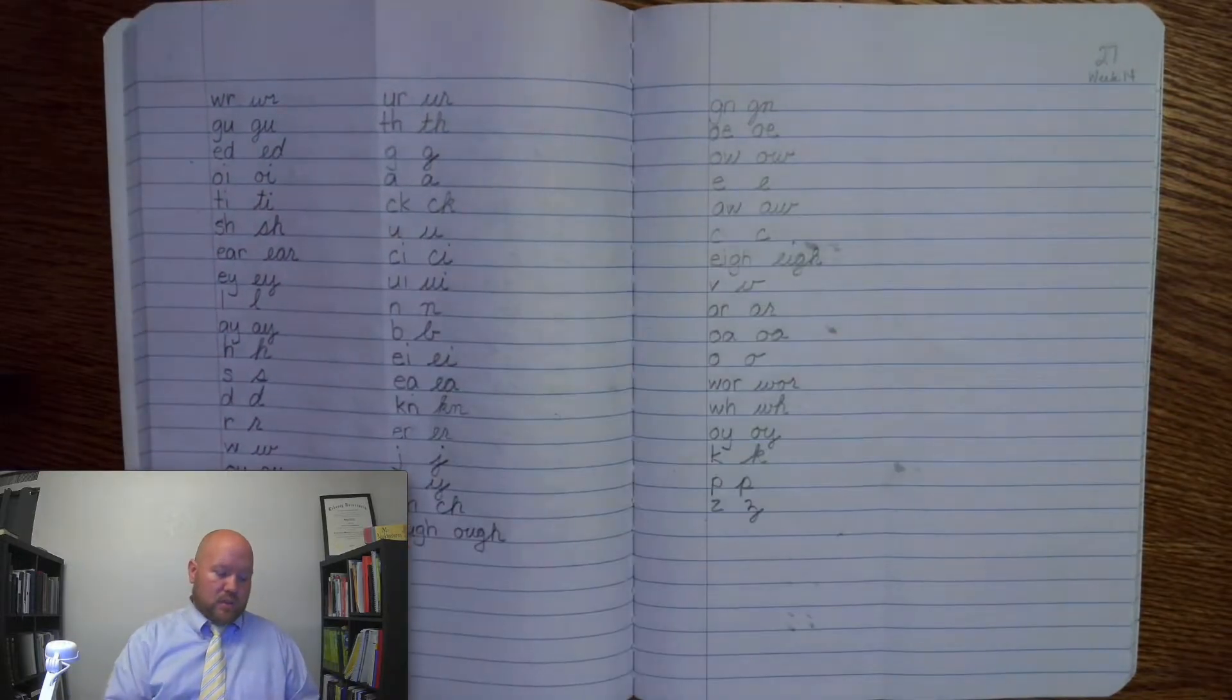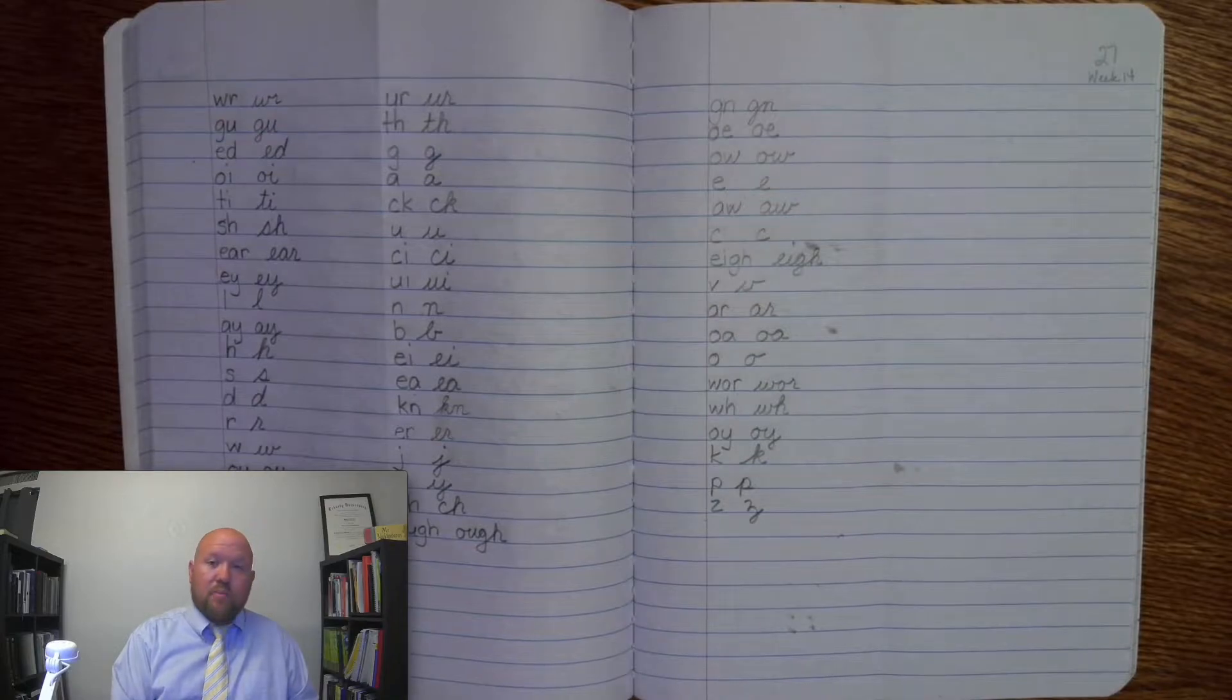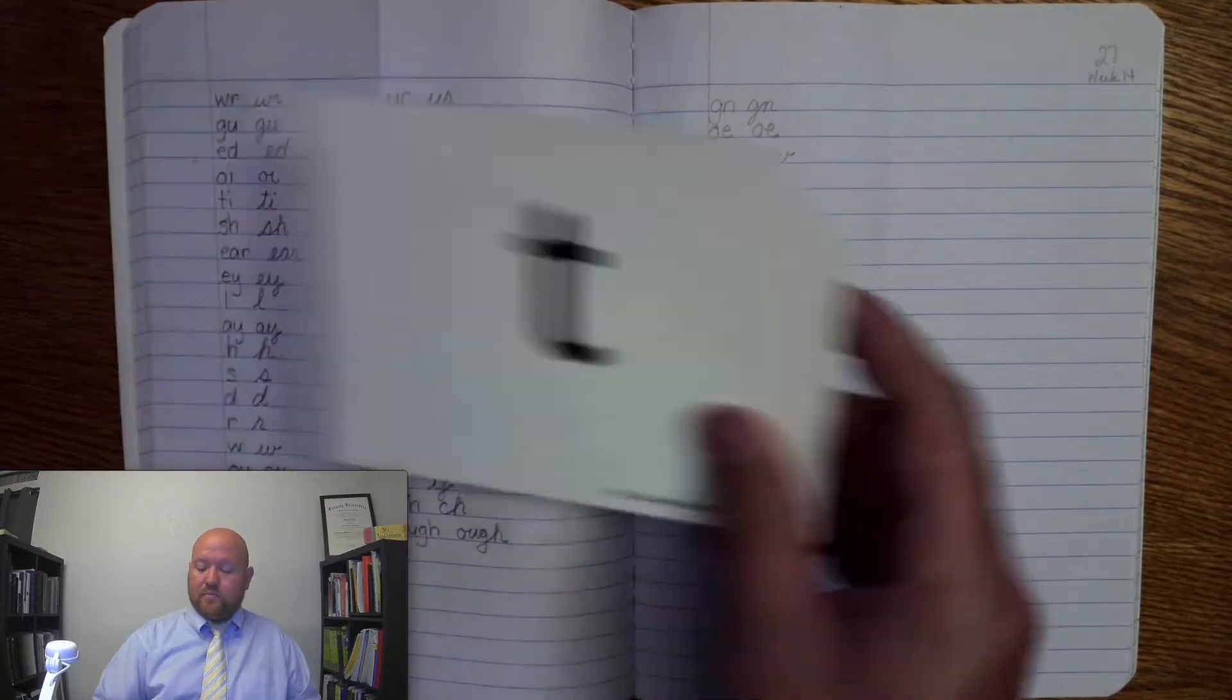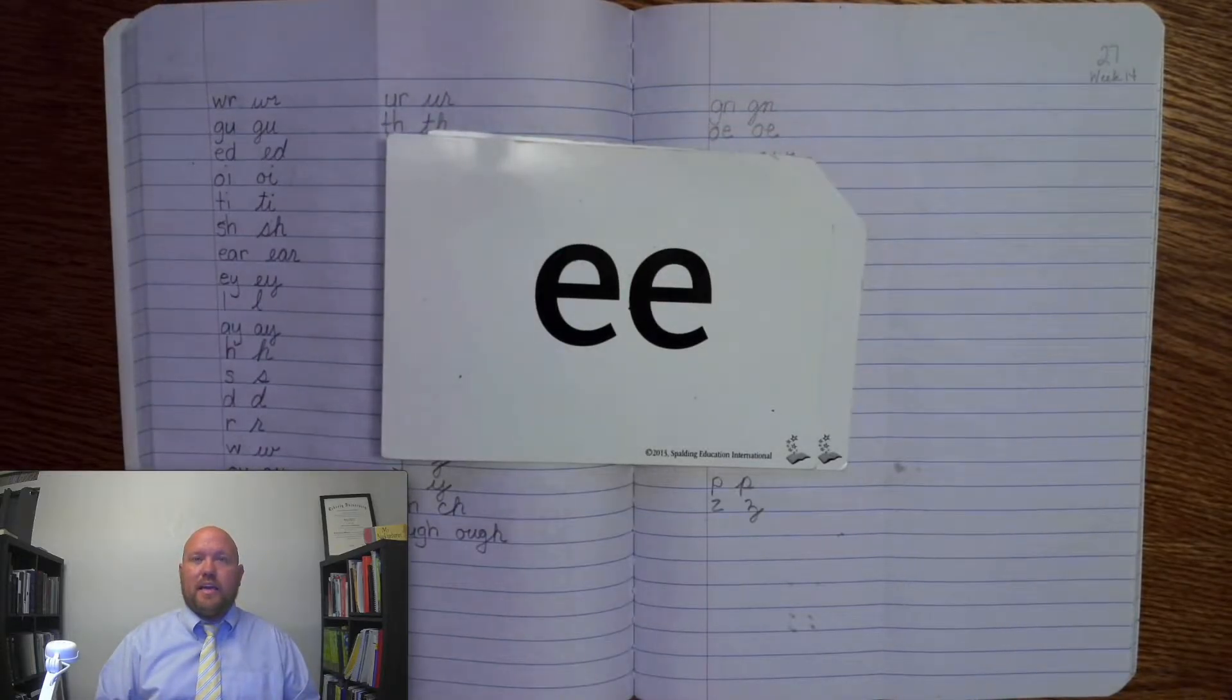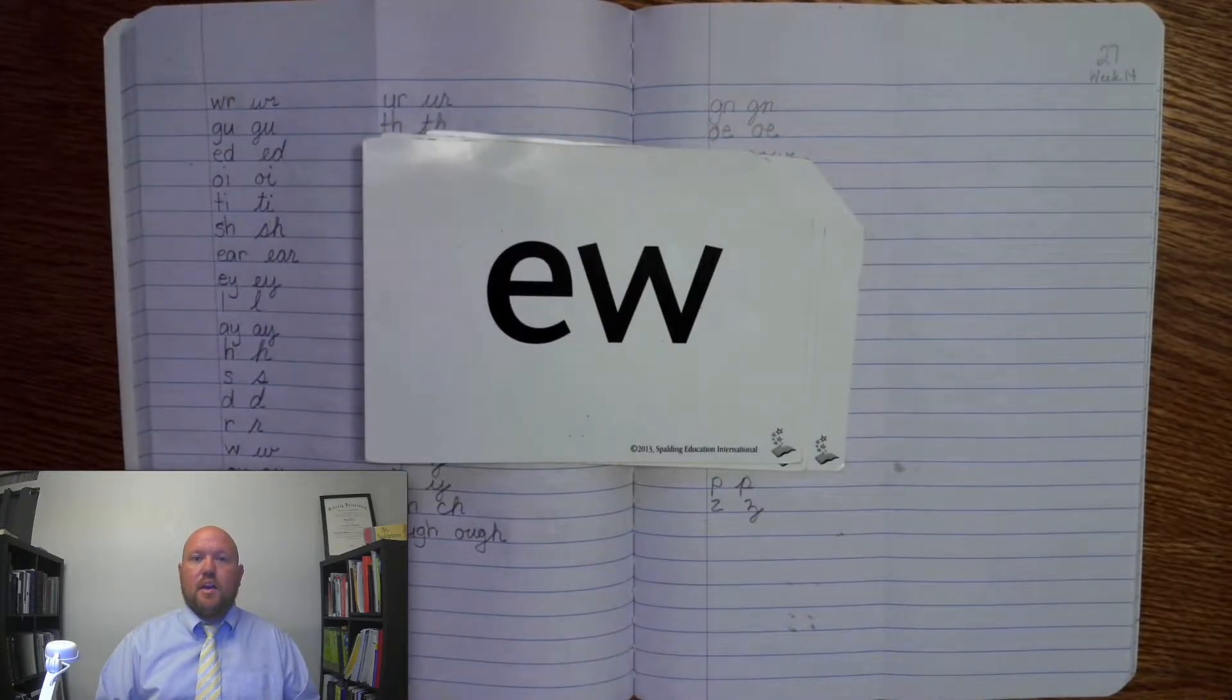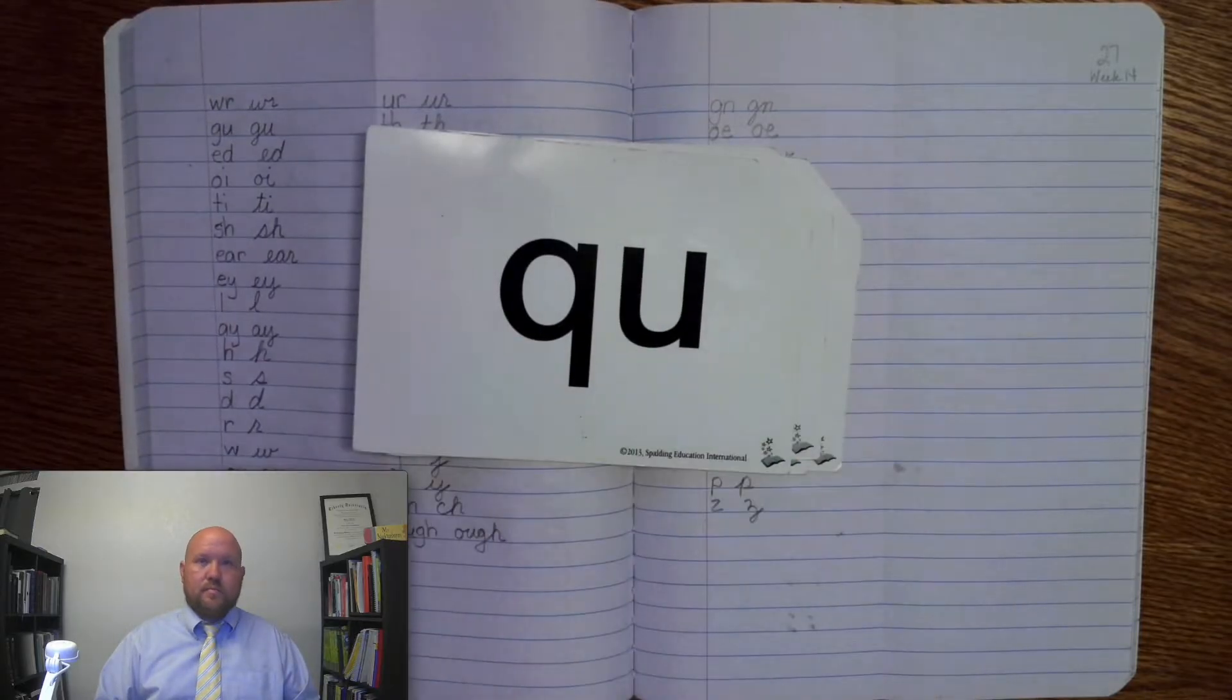This time through we'll say the sound followed by the cue. Try to say it before I do. T. E. U, U. In English words, Q's are always followed by a U.